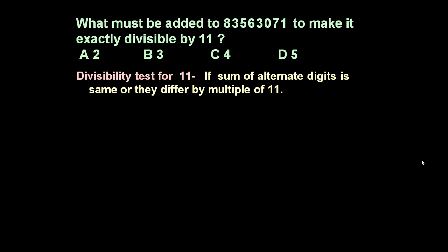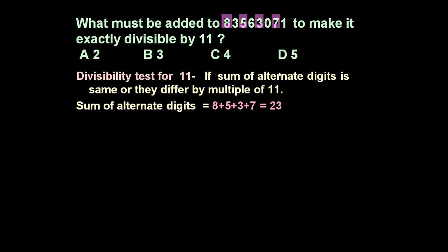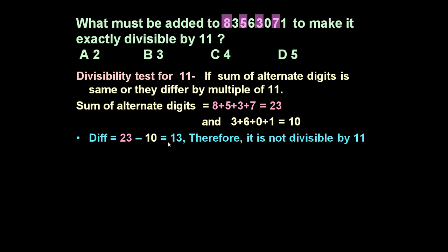The divisibility test for 11 states: if the sum of alternate digits is the same, or they differ by a multiple of 11, the number is divisible by 11. The alternate digits are 8, 5, 3, and 7 — their sum is 8+5+3+7 = 23. The other alternate digits are 3, 6, 0, and 1 — their sum is 10. Their difference is 13, so this number is not divisible by 11.